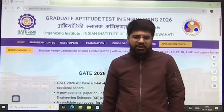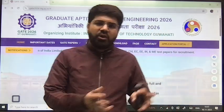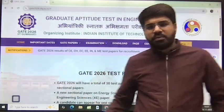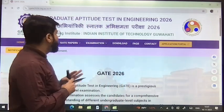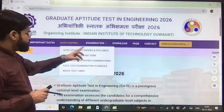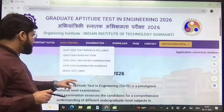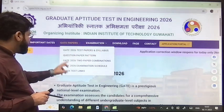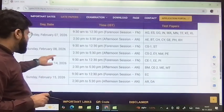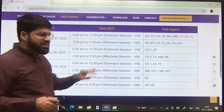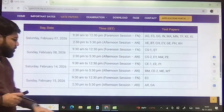It was pretty much expected that these four branches - ECE, EE, Mechanical and Civil - will be on the next weekend, that is 14th and 15th. On the first weekend majorly Computer Science has been there and other supplementary papers. Let's have a look into the detailed structure. This is the IIT Guwahati website. You can go under notifications or you can directly go to GATE papers and GATE 2026 examination schedule.